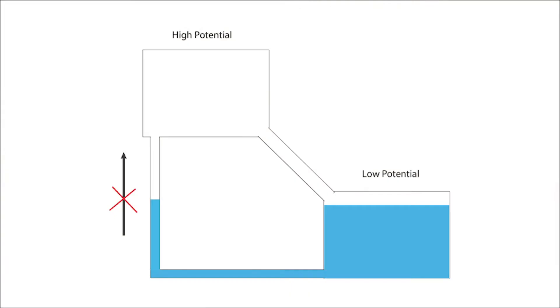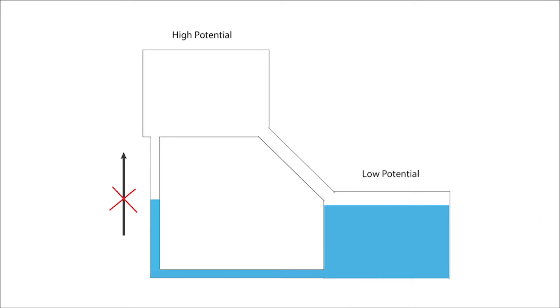For the same reason, if you simply connected a pipe from the lower tank to the higher tank, the water won't go back up to the higher elevation.